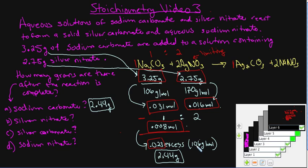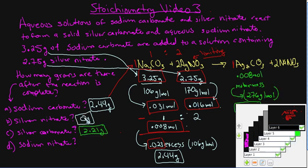Multiplying 0.023 moles by 106 g/mol gives 2.44 grams of Na₂CO₃ left over after the reaction. As for silver nitrate — it's the limiting reactant, so it gets completely used up. The amount of AgNO₃ remaining at the end of the reaction is zero.